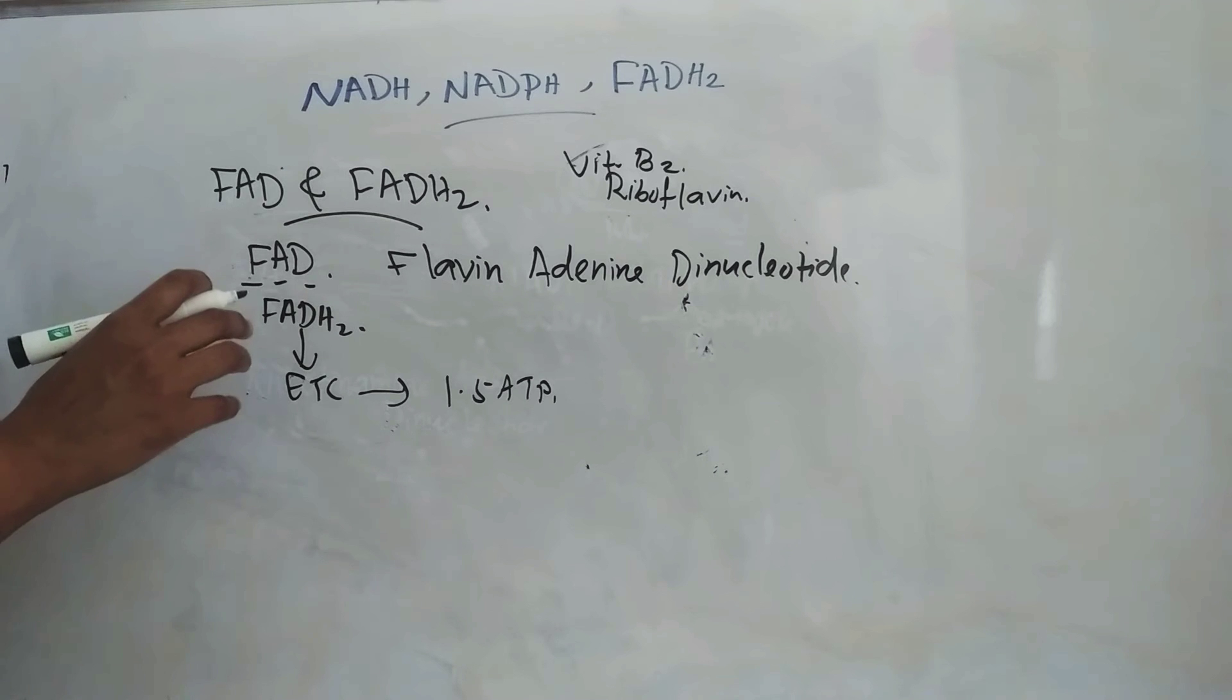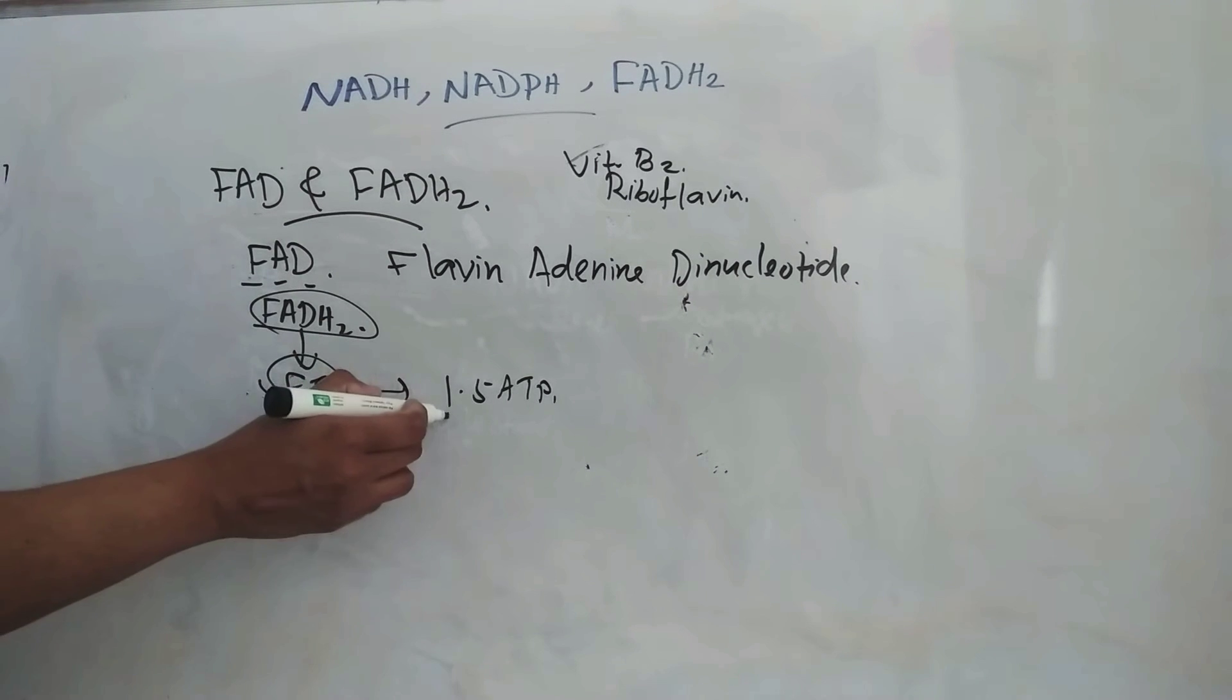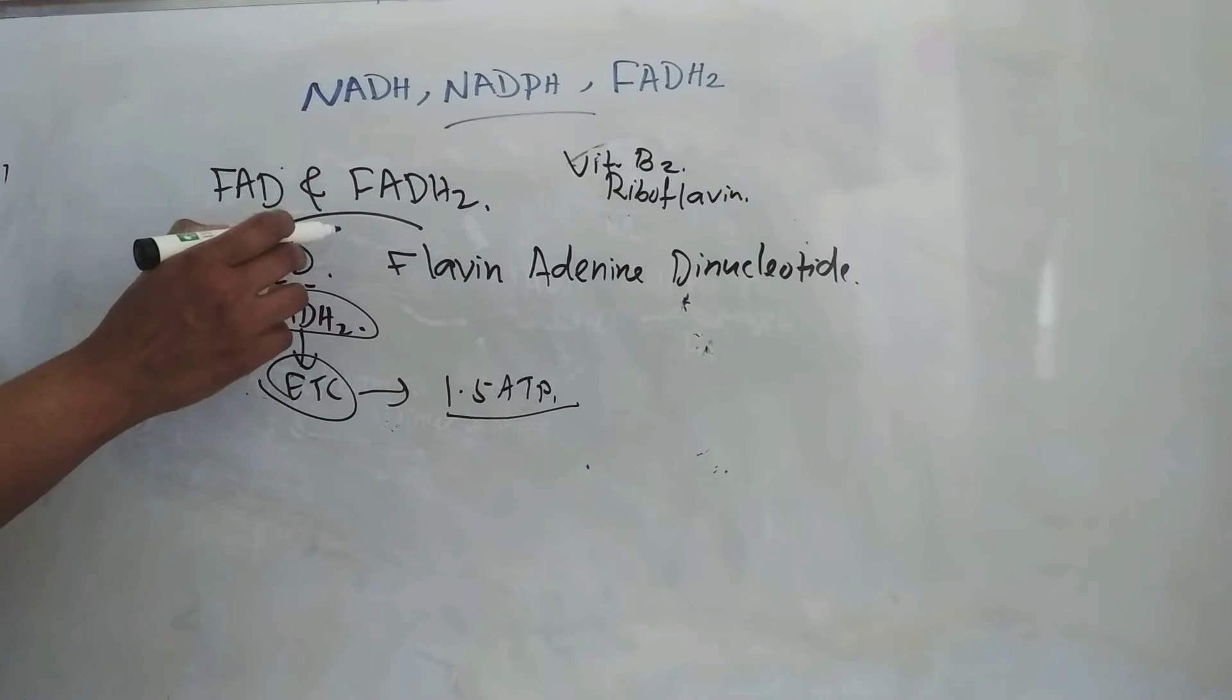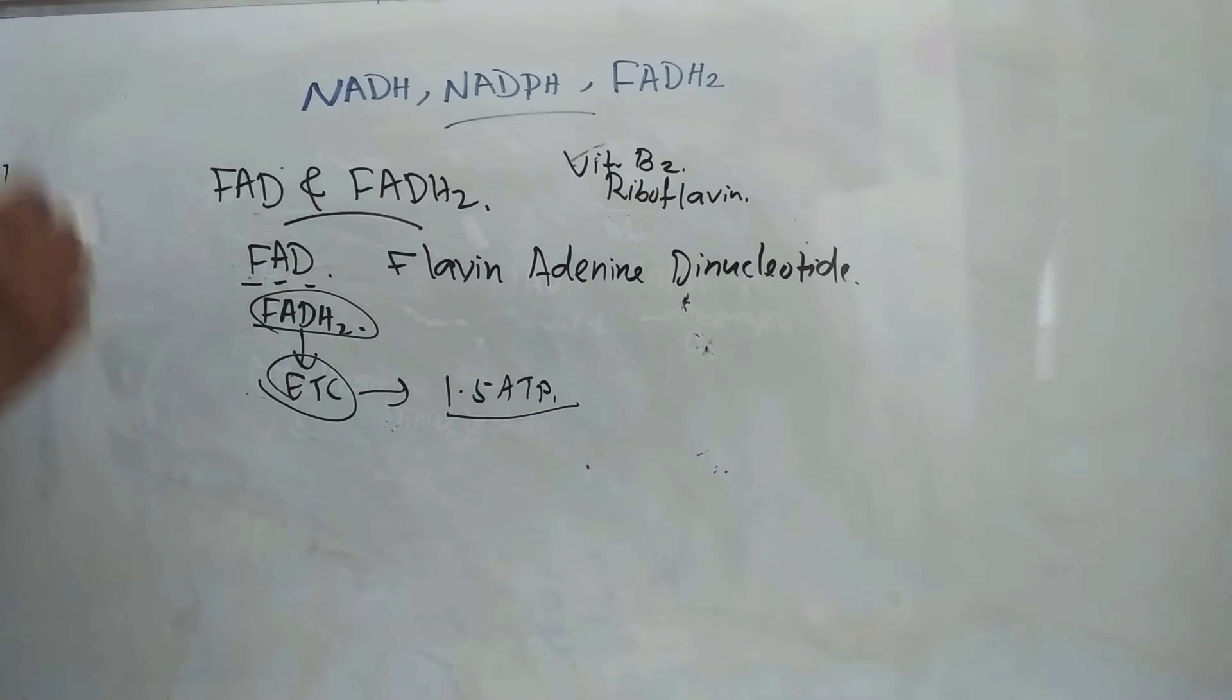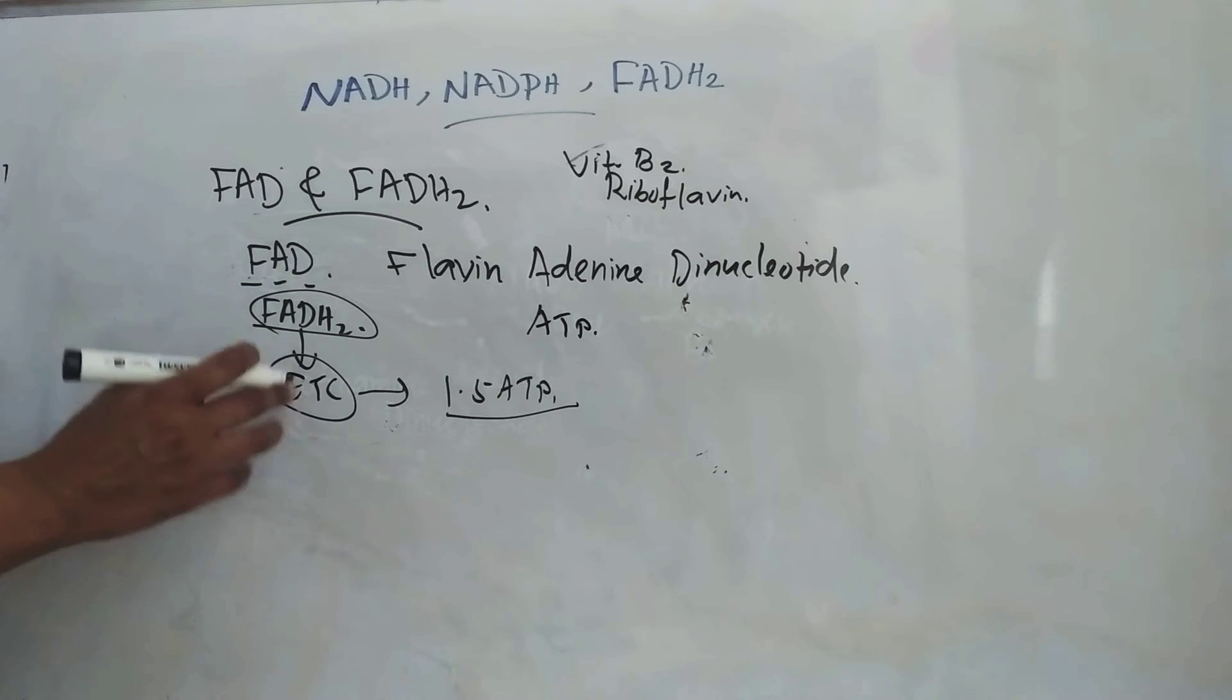This FADH2, this is also another major electron carrier in oxidation of fuel molecules. It will go to ETC and it will give 1.5 ATP. So basically, NADH and FADH2, these two take part in the formation of ATP through electron transport chain.